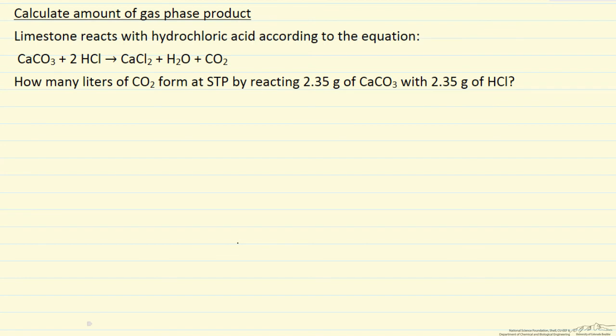This problem we have a reaction between limestone, which is calcium carbonate, and hydrochloric acid. We're going to make calcium chloride plus water plus carbon dioxide, and the question is how many liters of carbon dioxide would we form at standard temperature and pressure STP if we react 2.35 grams of calcium carbonate and 2.35 grams of HCl.